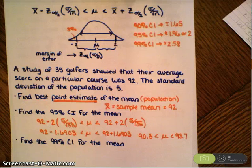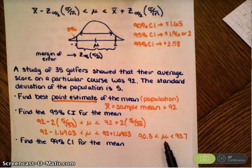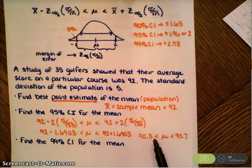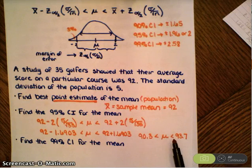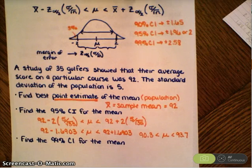I have an interval estimate here for my population mean. If I were to go out and sample more golfers for this particular course, I would estimate that I would find 95% of them to fall between the 90.3 score and the 93.7 score. Now I just want to do a 99% confidence interval to show you the difference between the two answers.